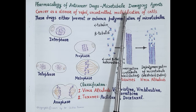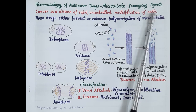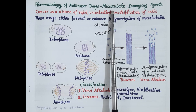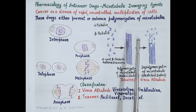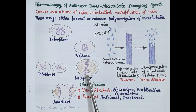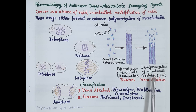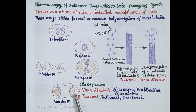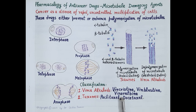The next category of cytotoxic drugs are microtubule damaging agents. These are M-phase specific drugs that inhibit the process of mitosis. Microtubules are essential for cell division and form spindle fibers. Polymerization of microtubules causes lengthening of spindle fibers, while depolymerization causes shortening. Microtubule damaging agents are of two types: vinca alkaloids (vincristine, vinblastine, vinorelbine) and taxanes (paclitaxel and docetaxel).